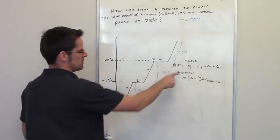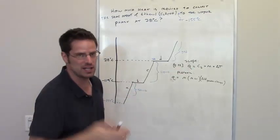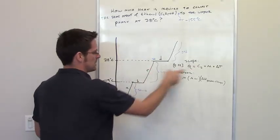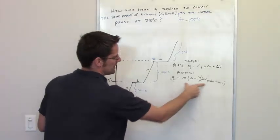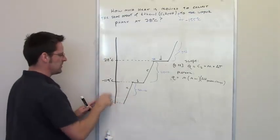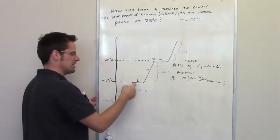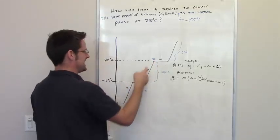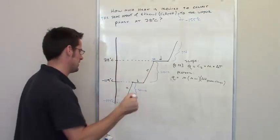As before, going up a slope uses the Q = c·m·ΔT equation, and going across a plateau uses the mass/molecular-weight/delta-H equation. Starting at negative 155°C, we must go up slope A to negative 114, across plateau B (solid to liquid), up slope C from negative 114 to 78, and then across plateau D. That is the full journey.